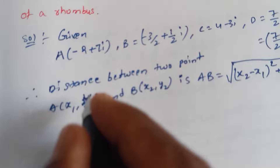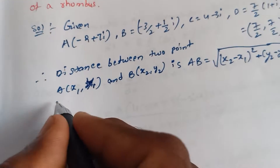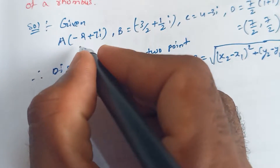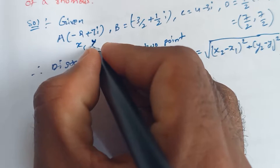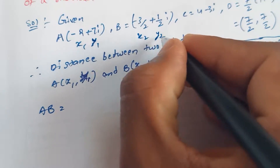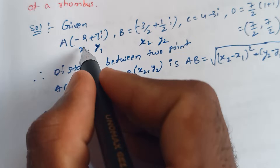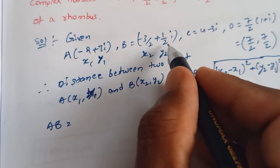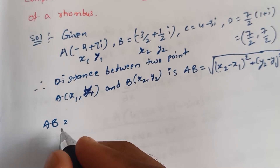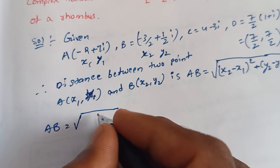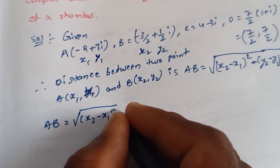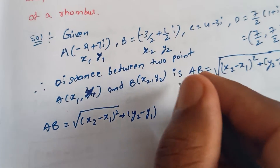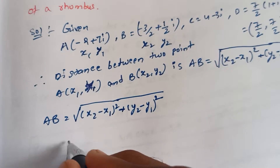First, AB distance value. AB equals root over x2 minus x1 whole square plus y2 minus y1 whole square. Here x1 is minus 2, y1 is 7, x2 equals minus 3 by 2, and y2 equals 1 by 2.